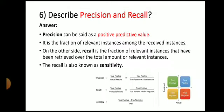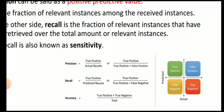Next question: describe precision and recall. Precision is the positive predictive value — it is the fraction of relevant instances among the retrieved instances. Recall is the fraction of relevant instances retrieved over the total amount of relevant instances, also known as sensitivity. Precision = true positive / (true positive + false positive). Recall = true positive / (true positive + false negative). Accuracy = (true positive + true negative) / total.